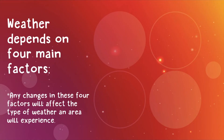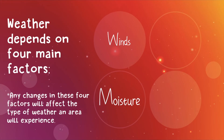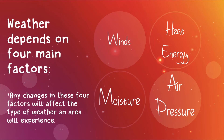Weather depends on four main factors, and any changes in these four factors will affect the type of weather an area will experience. The first one is winds — the amount of wind in an area is going to affect the weather there. Second is moisture — the amount of water in the air or proximity to a body of water. Third is heat energy from the sun that warms the temperatures of our planet. And the last one is air pressure.